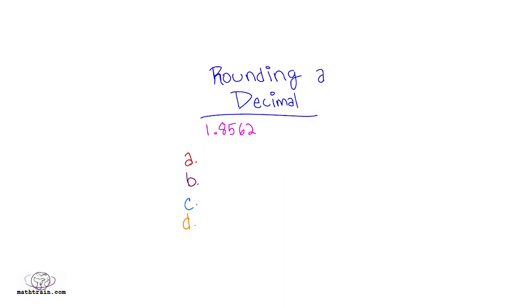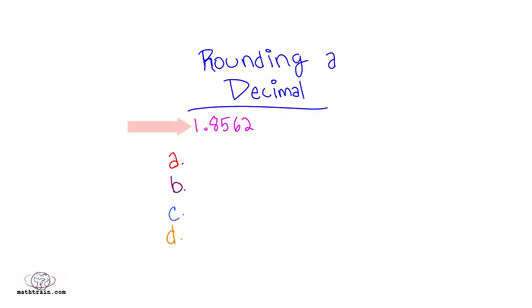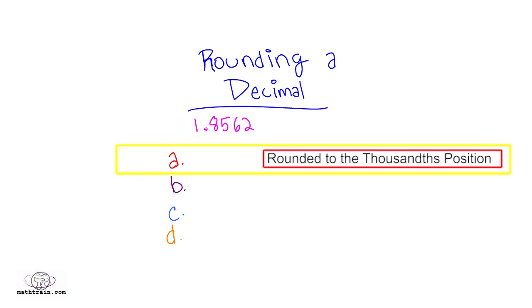Hi! It's Bob and Paul again and we're back in action. The first thing we're going to do is round a decimal. We're going to round the number 1.856.